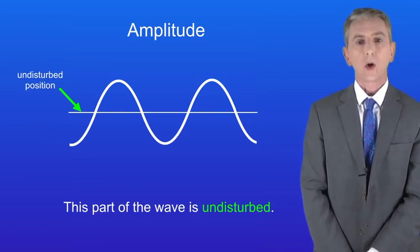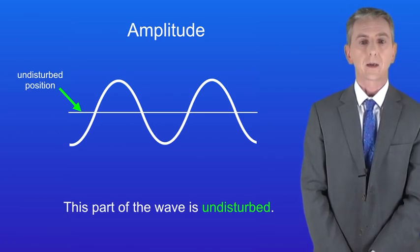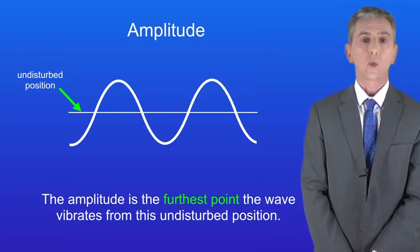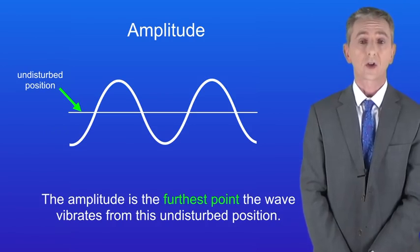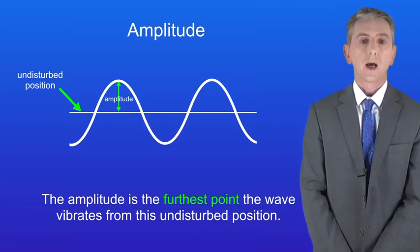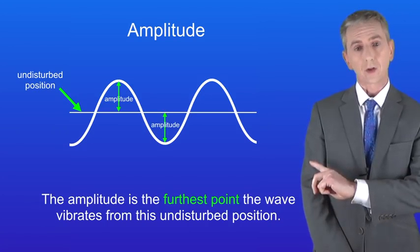If we look at the wave we can see a point in the center where the wave is not moving and I'm showing you that here. This part of the wave is undisturbed. The amplitude is the furthest point the wave vibrates from this undisturbed position. So this is the amplitude and also this is the amplitude.